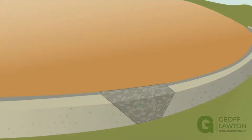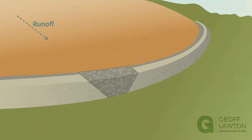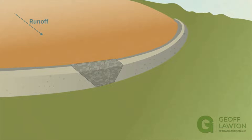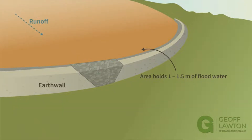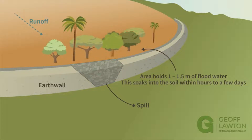Lunonia are dry dams fed from hard surface runoff, traditionally from solid rock and complex foothills. They are surrounded by compacted earth walls that can hold 1 to 1.5 meters of water, which soaks into the soil within a few hours up to a few days. In large rain events they overflow via a rock-based spillway. Diverse forests of productive species can be established in the base of lunonia.